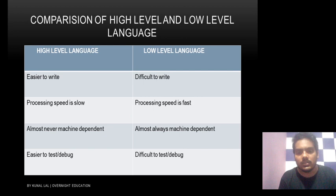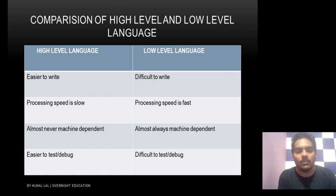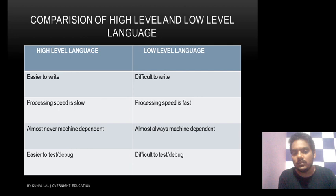High level language is easier to test and debug. Why? Because it is written in English or human language, so a programmer can test and identify errors easily. Debug means to find and fix errors in the program. Low level language is difficult to test and debug because it is written in combinations of zeros and ones and mnemonics, making it hard to identify errors.